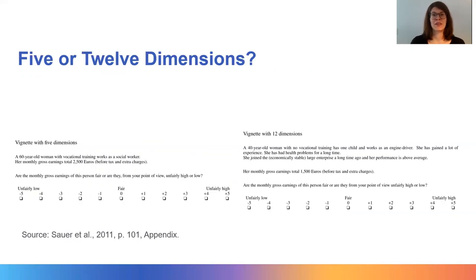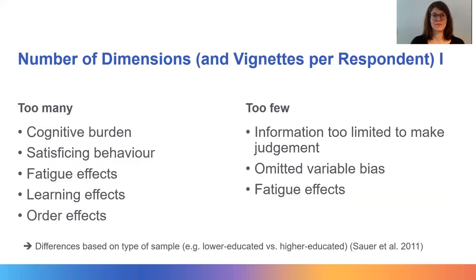Let us start with the number of dimensions. Comparing a vignette with 5 dimensions versus one with 12 dimensions, the vignette text with more dimensions is much longer and respondents have to consider many characteristics simultaneously, whereas fewer dimensions seems simpler and easier to evaluate. Dimensions should be selected based on theory and the research question. A higher number of dimensions may lead to cognitive overload, particularly if combined with a large number of vignettes per respondent. Respondents might further engage in satisficing behavior if confronted with too much information or a high number of complex vignettes.